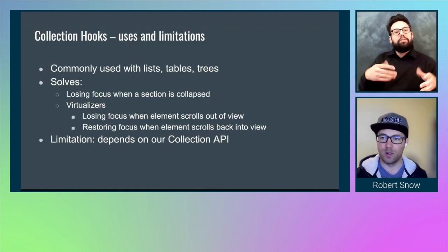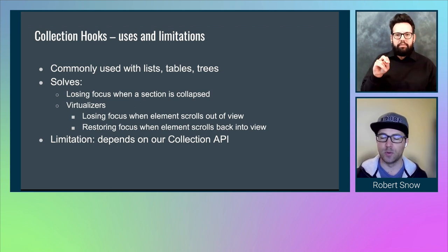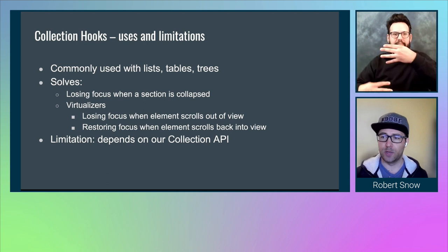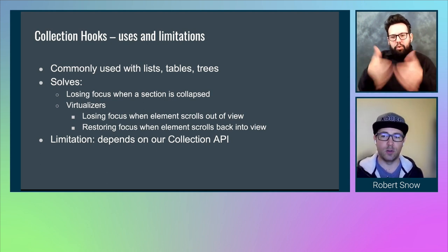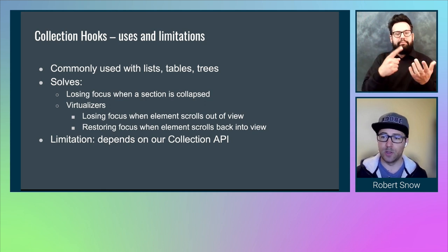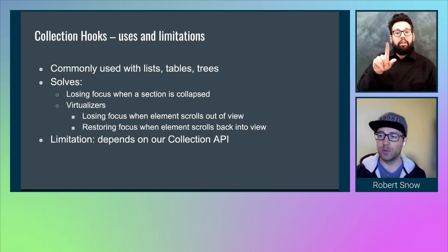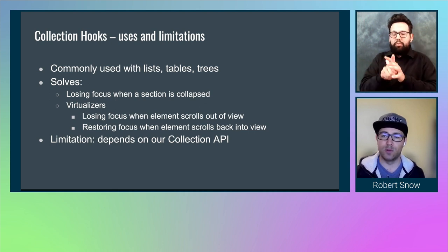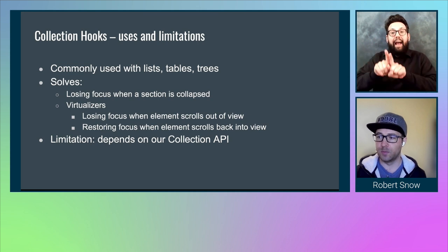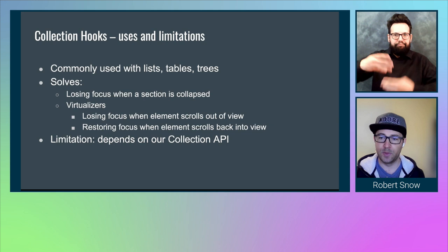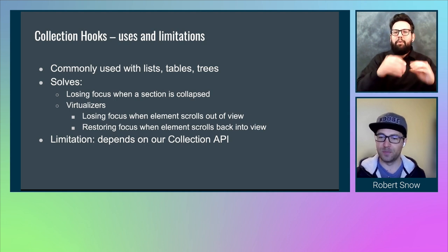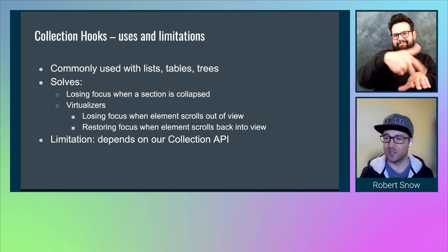So enter our collection hooks. We have a single API that we call our collection API, which can handle things like lists, tables, and trees. While writing components using collections, we found that it was pretty easy to lose focus to the body — maybe we collapse something that contained the focused element, or we delete a focused element, and when it's removed from the DOM, focus is lost. For those unfamiliar with virtualizers: they are components that handle rendering extremely large sets of data efficiently by only rendering what fits into the current viewport in reusable containers. As a user scrolls, containers move out of the viewport, dump their contents, and are filled with new content on rotation, much like a conveyor belt.